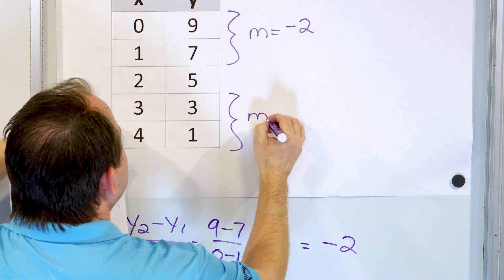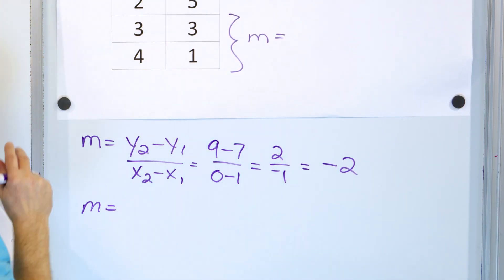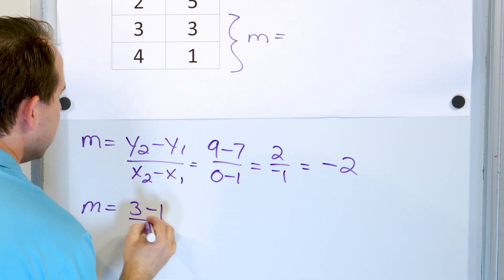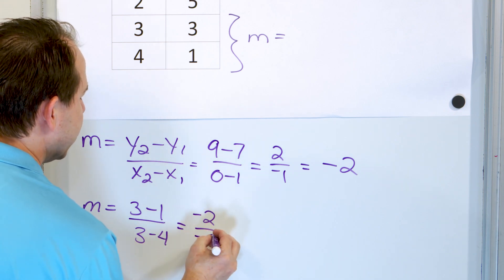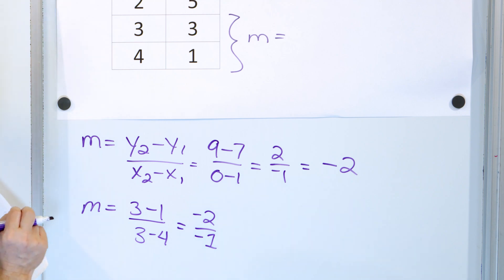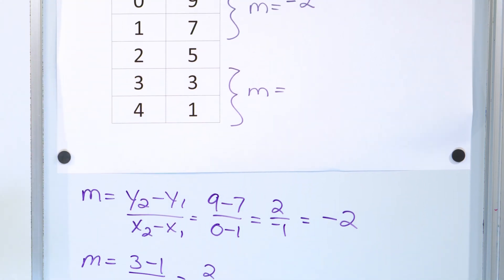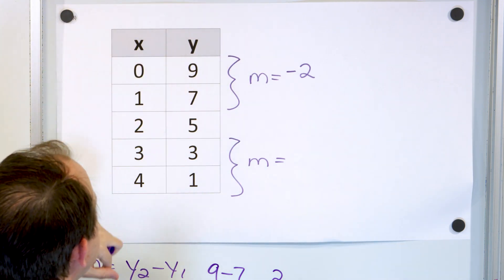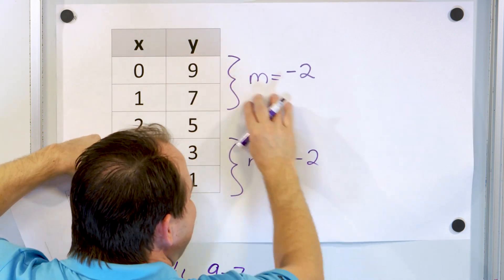Now let's see if this is a constant or variable slope by calculating the slope between two other points. I'll subtract the y values: 3 minus 1, and going the same direction for x: 3 minus 4. Three minus one is positive two — I made a small slip but corrected it — and three minus four is negative one. So I have positive two on top and negative one on the bottom, giving me negative two. It's exactly the same slope: negative two. Between these two points on a graph the slope would be negative two, and between the other pair of points the slope is also going down at exactly the same rate.